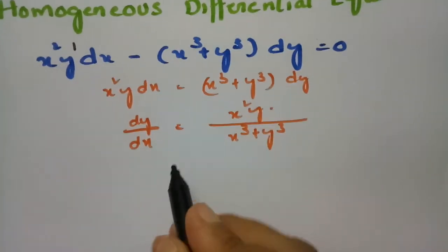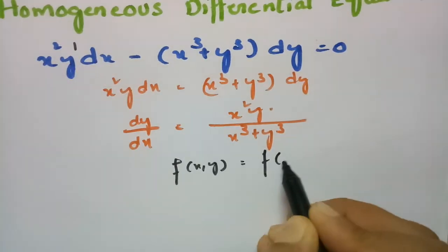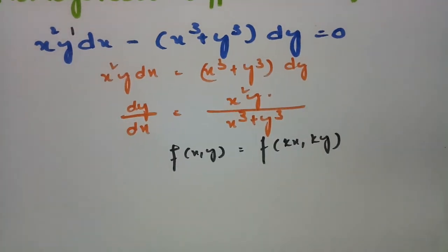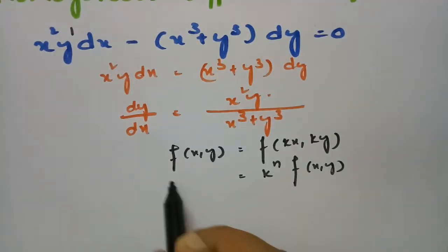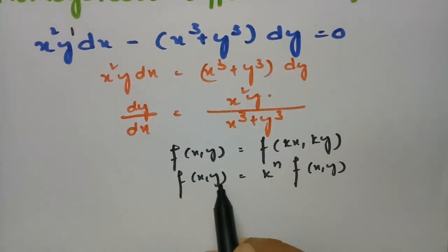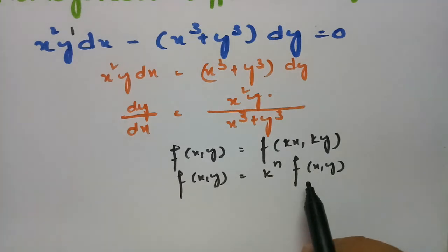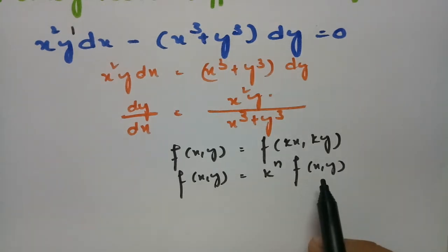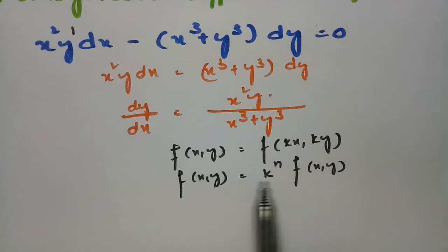This is a function in x and y. If we replace x with kx and y with ky and the result is k to the power n times the same function f(x, y), then this can also be identified as a homogeneous differential equation. There are two ways to identify: the first is having the same degree throughout, or else using this substitution form.